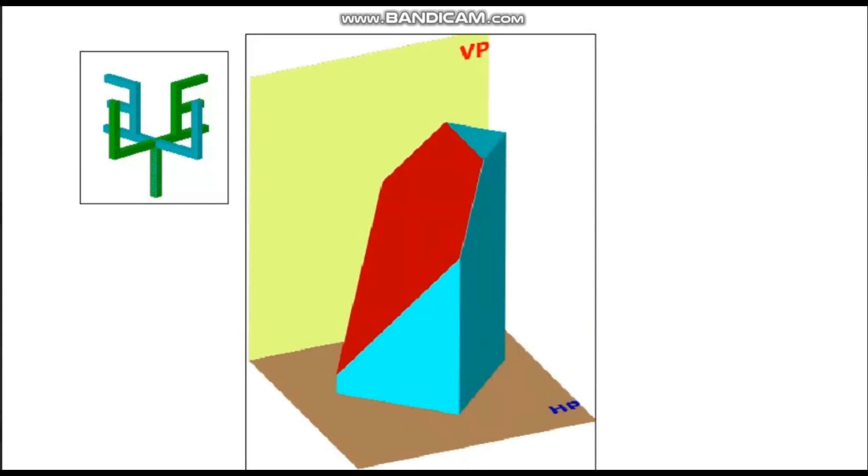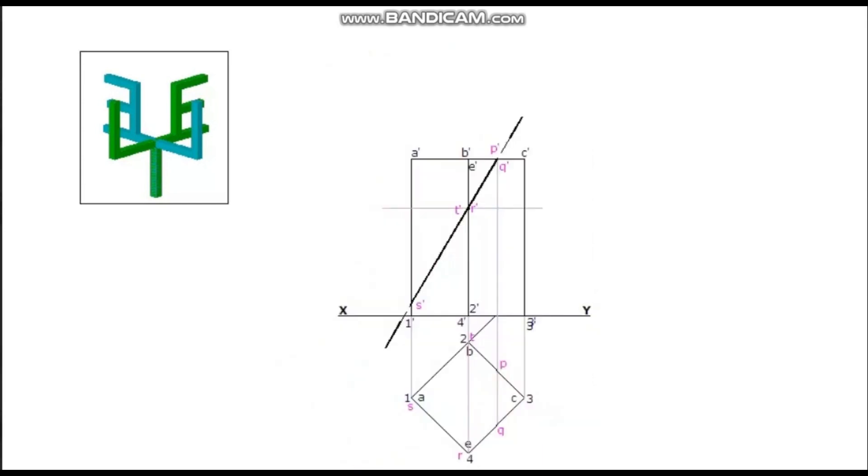The cut portion is removed. The remaining portion is darkened. In the plan, the section's surface is differentiated by drawing hatching lines.